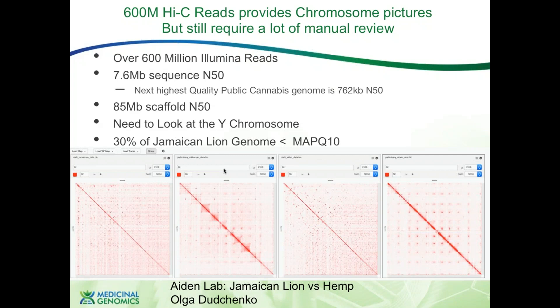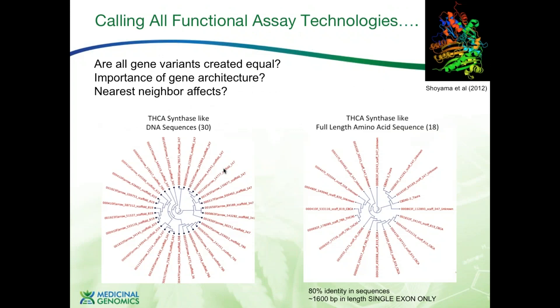One thing we learned is that about 30% of the Jamaican line genome is not mappable with 2×150 Illumina reads — they have a mapping quality of less than 10 and are very difficult to place. This plays a role in linkage maps and Hi-C data. Nevertheless, we were able to identify 30 different THC synthase-like sequences — the genes that fold cannabigerol precursors into cannabinoids. About 18 look like they have uninterrupted CDSs with start and stop codons. These synthases are single-exon only, which I'll touch on later.